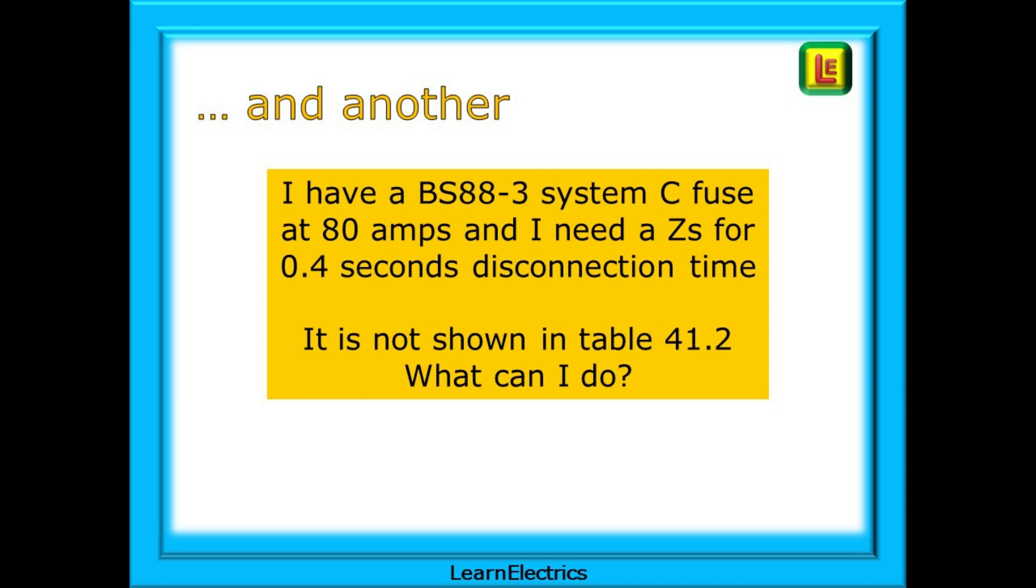And one that was sent to me by email: I have a BS88-3 system C fuse at 80 amps and I need a ZS for 0.4 seconds disconnection time. It's not shown in table 41.2 of the regs. What can I do?